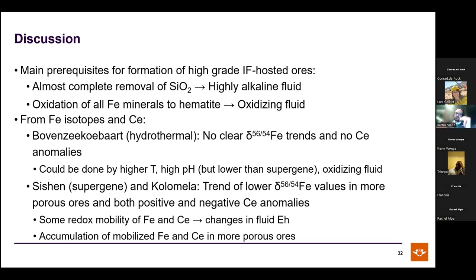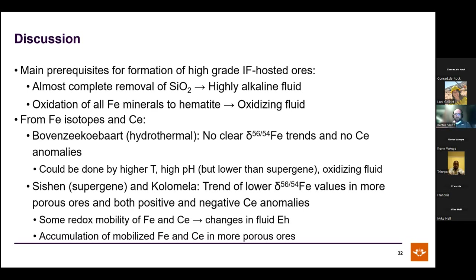Iron remobilization is also evidenced by specularite veins — iron clearly did not always stay put. Remobilizing iron requires either reduction-reoxidation or very acidic fluids, contrasting with the alkaline conditions needed for silica removal. These ores send mixed geochemical messages, suggesting either constantly evolving fluid chemistry or more than one event. Lighter iron isotopes and cerium enrichment in more porous ores suggest leaching from denser ores with local re-accumulation.